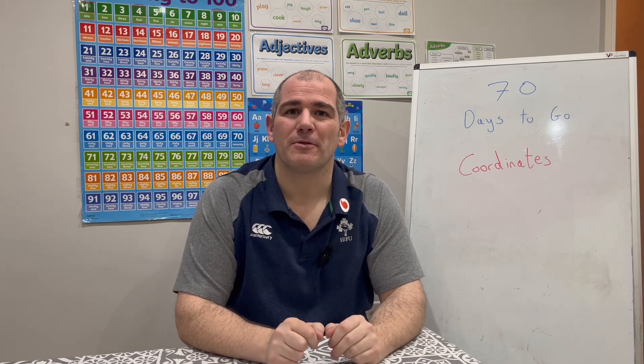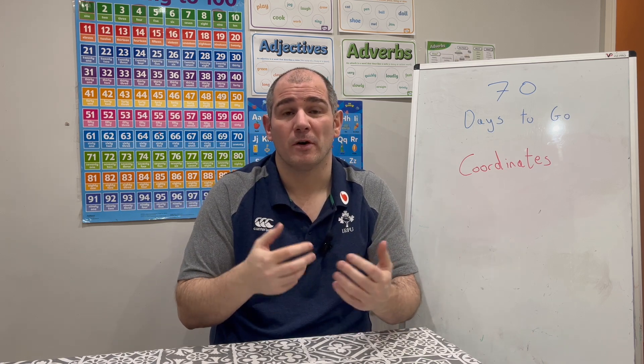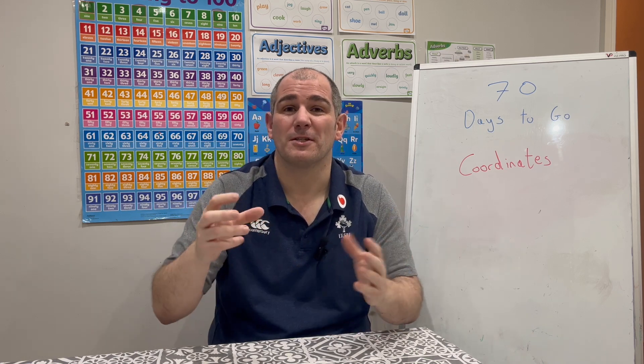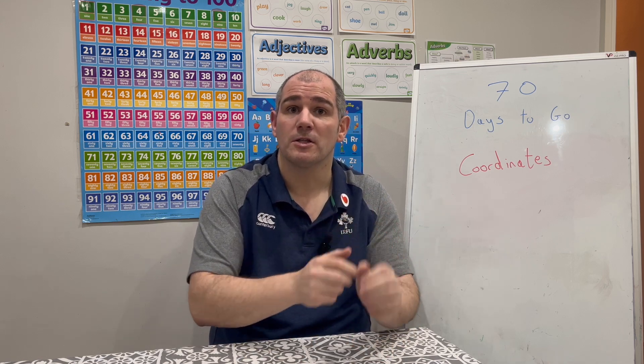Hi everyone, welcome to today's GCSE Foundation Revision video. There's 70 days to go and we're going to focus today on the topic of coordinates. We're going to focus on how to plot coordinates, how to write down the coordinates of plotted points, and also how to answer questions that involve coordinates — for instance, there might be shapes on grids and you might need to write down the coordinates of where the other points will be. I'm going to go through some questions and then there'll be some for you to try yourself, and I'll talk about where the practice questions are at the end of the video. So let's get started.